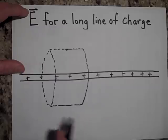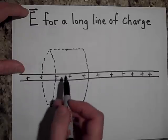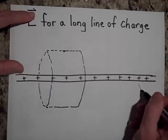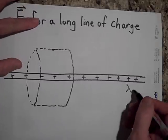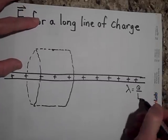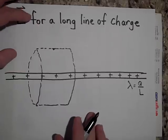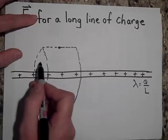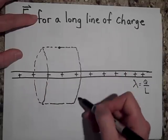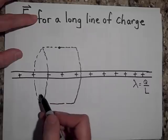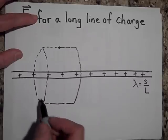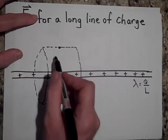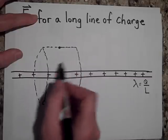That's my Gaussian surface. Let's say the linear charge density is lambda — that's the charge per length. If I want to know the field here, do you see how much flux is coming out the sides of this cylinder — this side and this side? The answer is zero flux, because the field just goes straight out radially. So the only flux through this cylinder is through the curved sides.